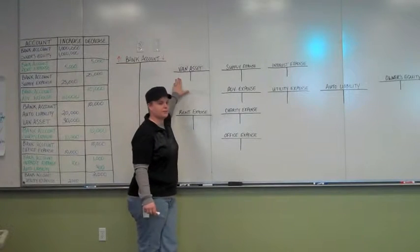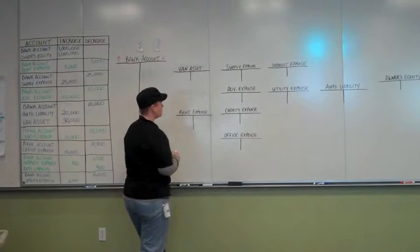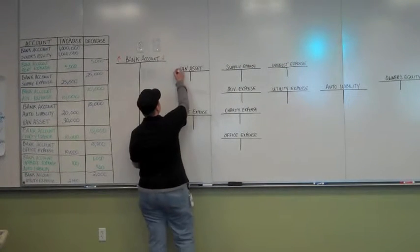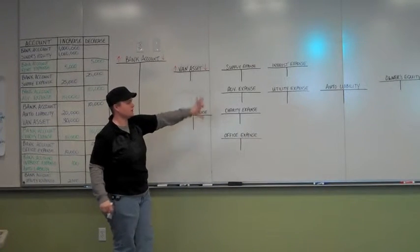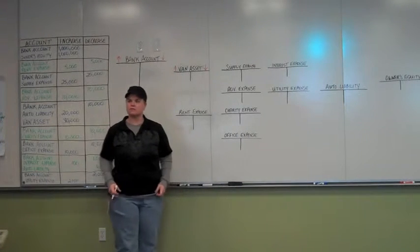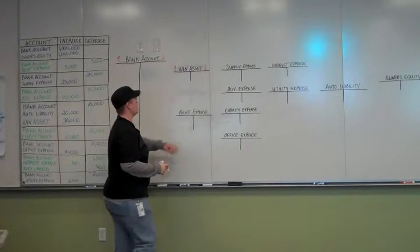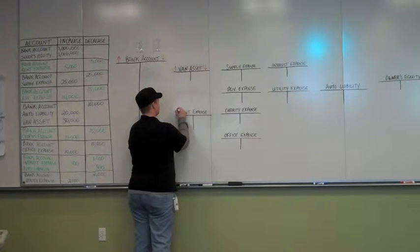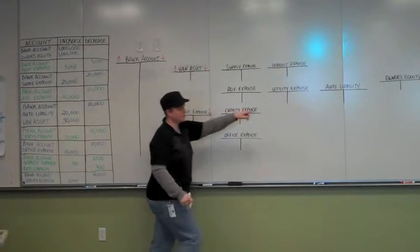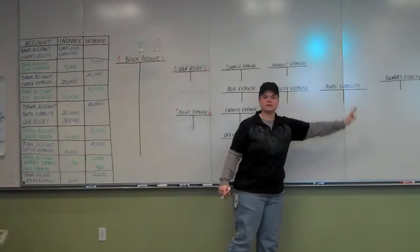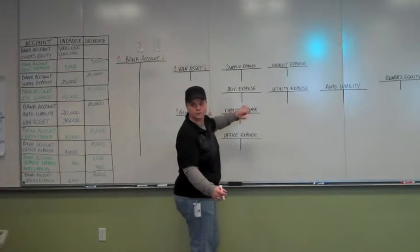Van asset, what type of account is it? It says that in the title. All right, so how does it work? Same way. Same way as the bank account. All right? We've got a whole bunch of expense accounts. How do expense accounts work? They go up on the right. I mean, they go up on the left.